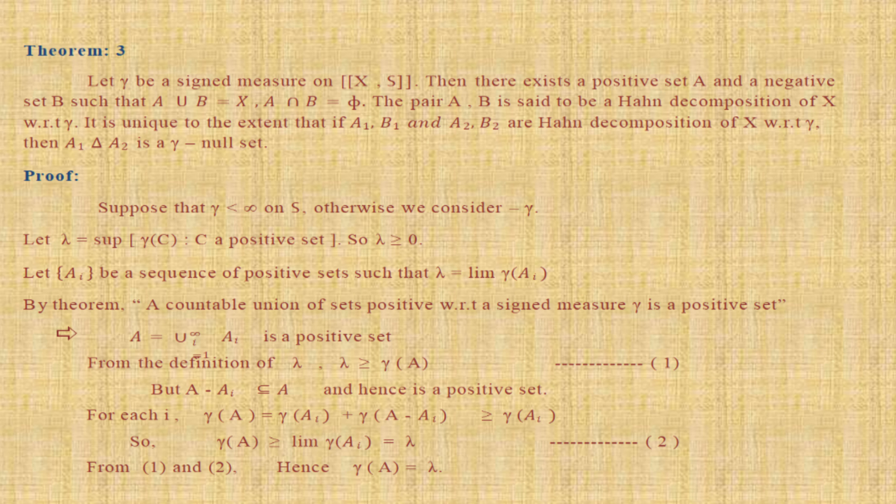Hahn Decomposition Theorem: let ν be a signed measure on (X, S). Then there exists a positive set A and a negative set B such that A ∪ B = X and A ∩ B = ∅ — that means A and B are disjoint sets. The pair (A, B) is said to be a Hahn decomposition of X with respect to ν. It is unique to the extent that if (A₁, B₁) and (A₂, B₂) are Hahn decompositions of X with respect to ν, then A₁ △ A₂ is a ν-null set.